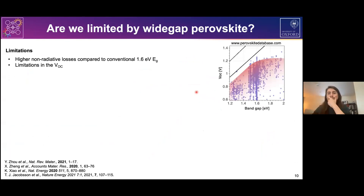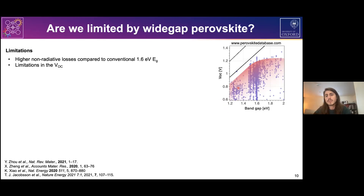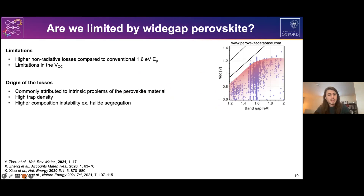Looking at 1.8 eV perovskite solar cells, we can immediately notice from this collection of different p-i-n cells that the VOC strongly saturates as we move beyond 1.6 eV devices. We observe a pinning of the VOC to values around 1.2 volts. The origin of these losses is usually attributed to intrinsic issues in the perovskite material — large trap density or instability due to the larger amount of bromide used to achieve such bandgaps. However, we will show that this might not be the complete picture.